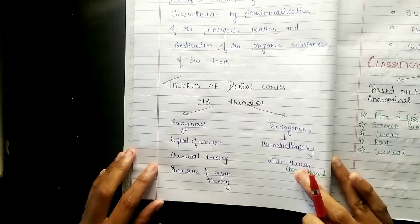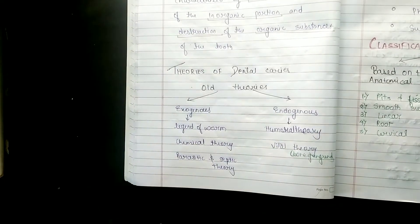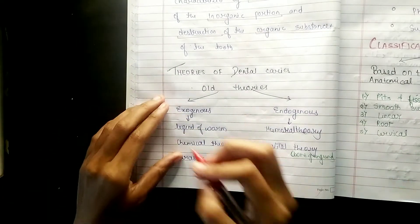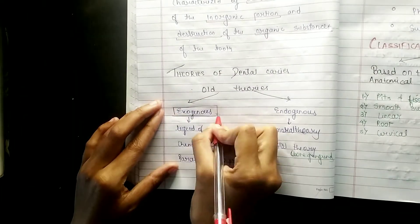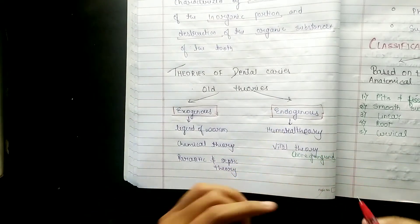Now coming to the theories of dental caries. When a long note you have to write, so on that basis I am going to tell you about the old theories also. First we will write old theories. Old theories are divided into two types: first is exogenous, and second is endogenous.